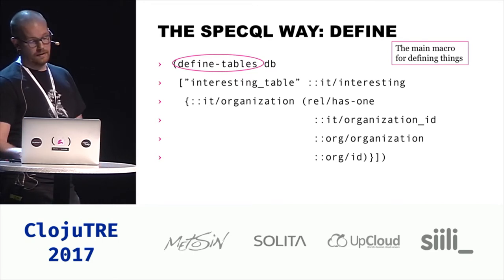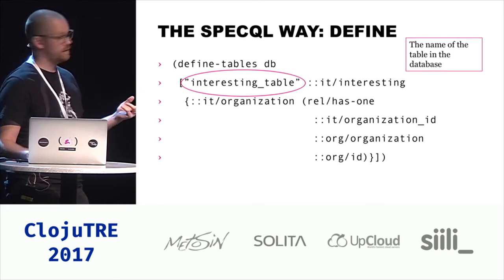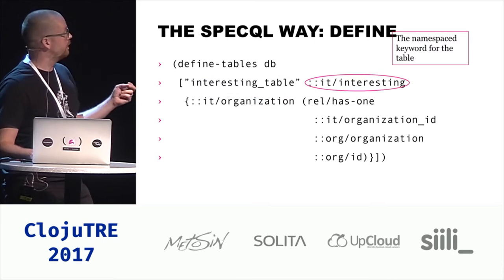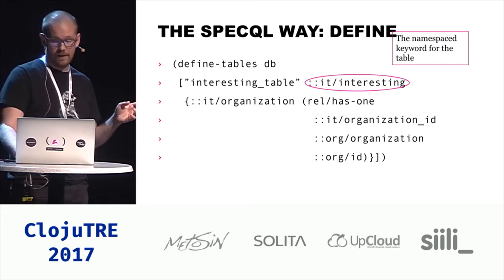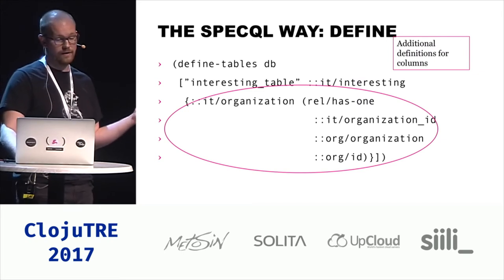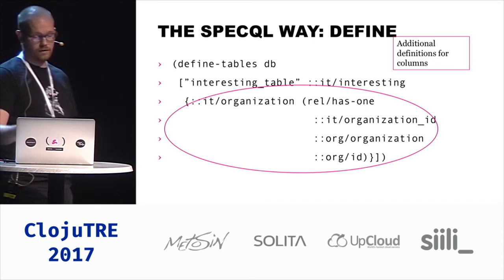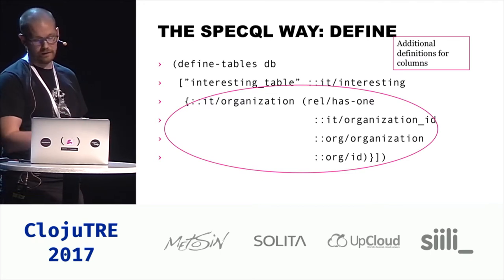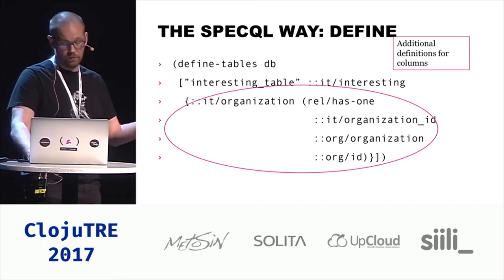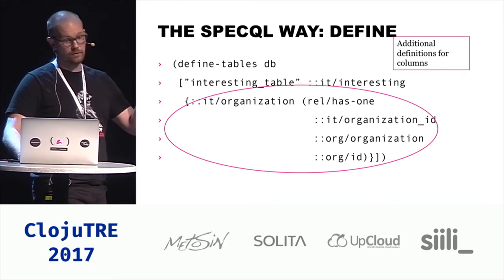DefineTables takes a series of vectors where the first element is the table name in Postgres, and the second one is the namespace keyword for the table. Everything is done in namespace keywords — no raw keywords anywhere. Then you can do additional definitions for columns. Here we're defining a virtual column net-organization, which is actually a join from another table. The join takes the column in this table, the other table, and the column in the other table. And you can do remapping of columns to other keywords, or interesting things like if you have a string-based enumeration in your database, you can transform it to keywords.